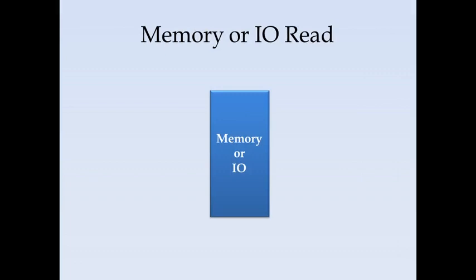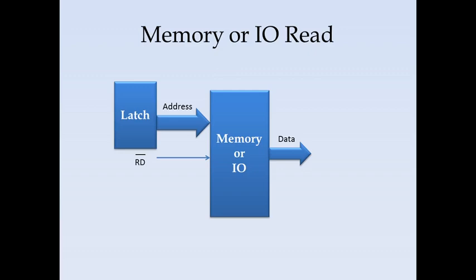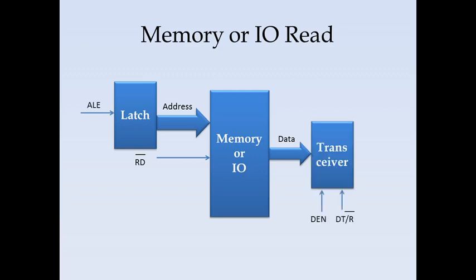For a memory or I/O read operation, the 8086 first supplies the address, then asserts the active-low READ line. Based on the READ signal, the memory or I/O device sends data on the data lines. To latch the address, the ALE signal is used. For reading data, the transceivers are enabled by DEN, and the direction is set by DT/R-bar, which should be active low to receive data at the 8086.